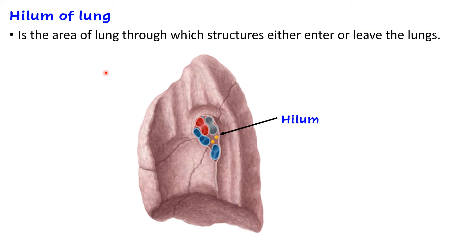Now let us define what is the hilum of lung. In this picture, you can see a comma-shaped area through which a number of structures are passing — you can see arteries, veins, and nerves. This comma-shaped area is known as the hilum of lung. In Latin, hilum means depression, so this area is slightly depressed from the surrounding area. We can define that the hilum of lung is the area of lung through which structures either enter or leave the lungs.